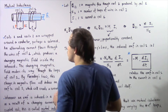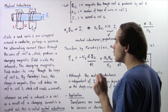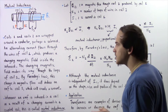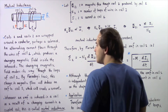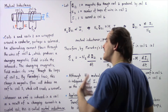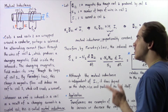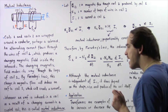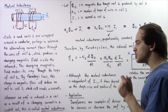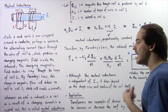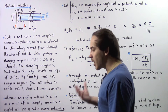So coils number one and two are wrapped around a solenoid. An alternating electric current flows through the wires of coil number one, which produces a changing magnetic field inside the solenoid. The changing magnetic field makes its way through the loops of coil number two. By Faraday's law, this change in magnetic flux within coil number two will induce an EMF, which in turn will create an electric current. This is known as mutual inductance.